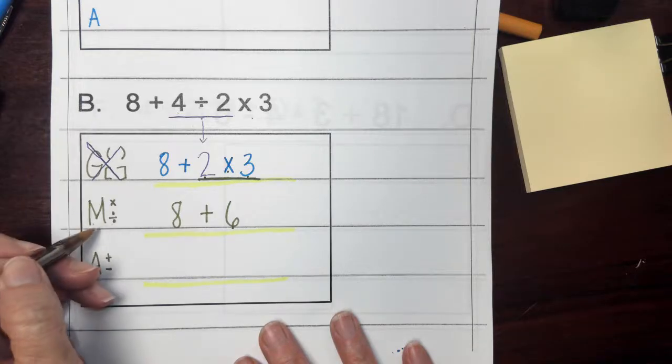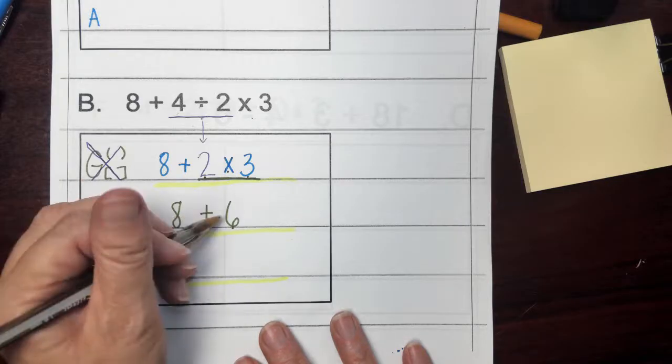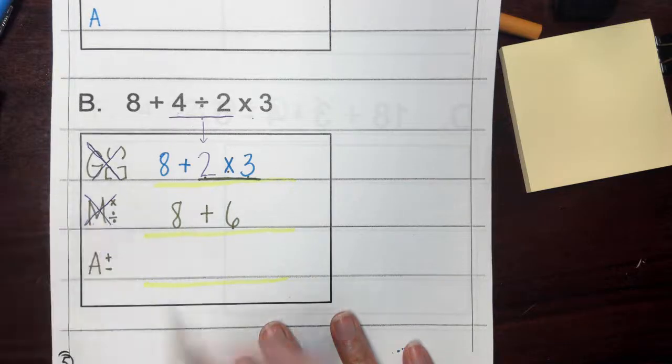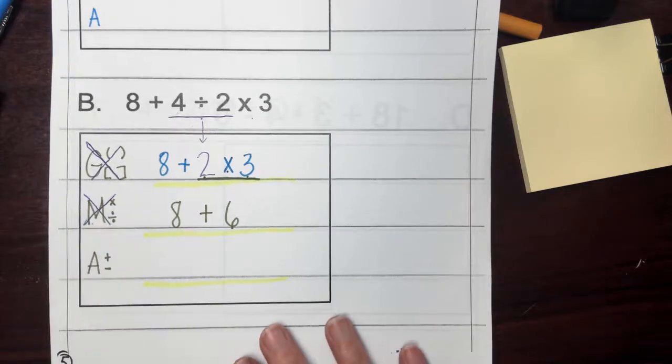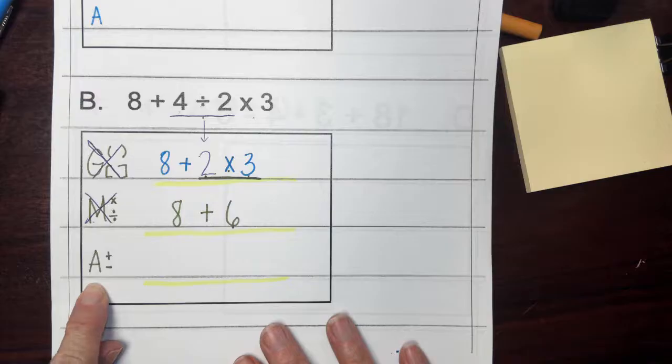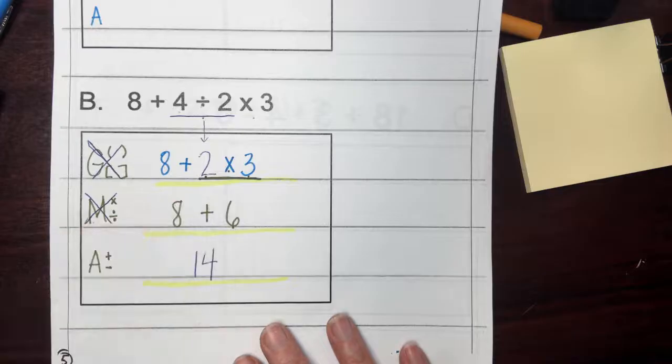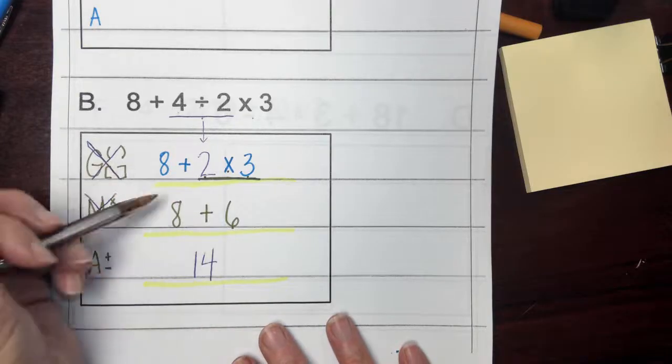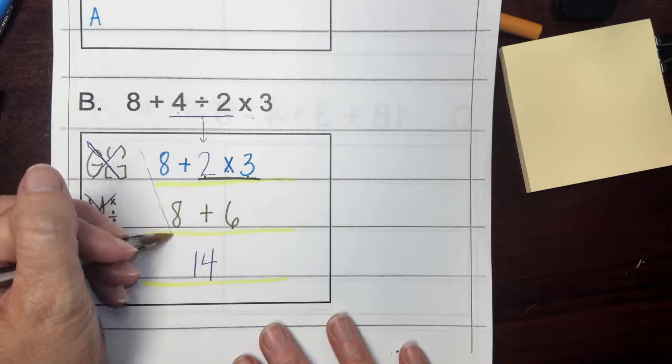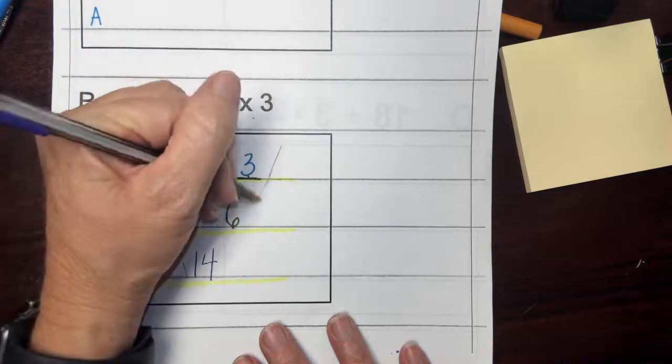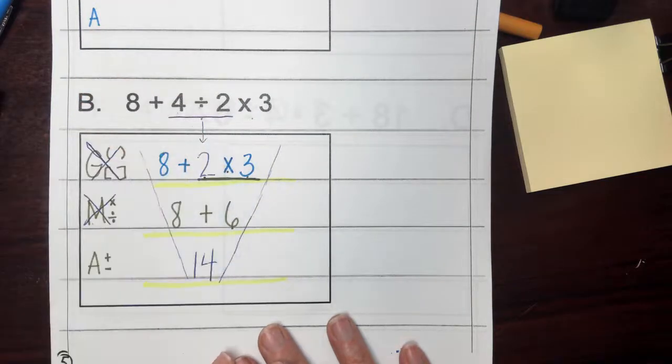So now when I scan my numbers, my expression, I don't see any more multiplicative actions. So I'm done. And the last thing I'd be looking for is any adding or subtracting. So eight plus six is going to give me 14. 14 is my answer. And making sure that you're solving in that pizza format. That's super important. Okay?